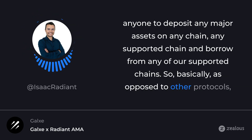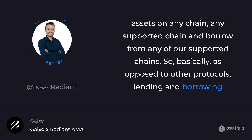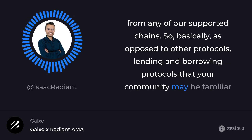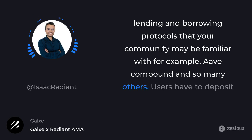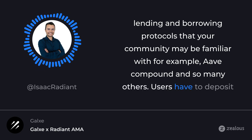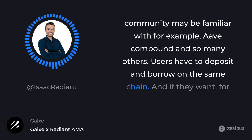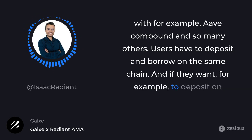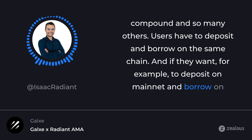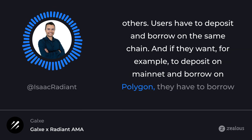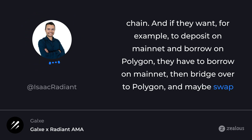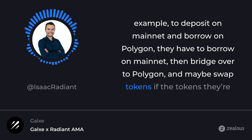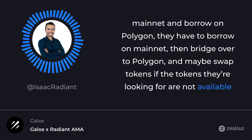As opposed to other lending and borrowing protocols that your community may be familiar with — for example, Aave, Compound, and many others — users have to deposit and borrow on the same chain. If they want to deposit on Mainnet and borrow on Polygon, they have to borrow on Mainnet, then bridge over to Polygon, and maybe swap tokens if the tokens they're looking for are not available on Mainnet.